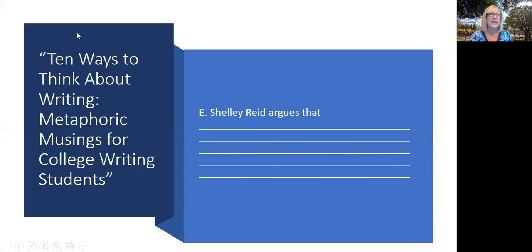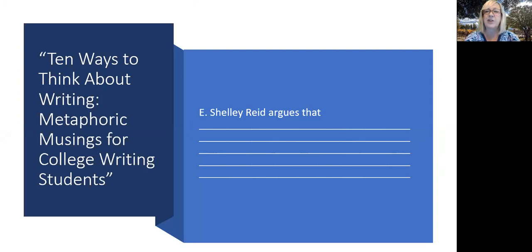E. Shelley Reid had an argument in her article, '10 Ways to Think About Writing.' And if we're going to write about an argument, we would introduce it with this phrase: E. Shelley Reid argues that — and I want you to think about it for just a minute, what is her main point? She spends 23 pages talking about writing in a way that most of you found interesting, some of you found surprising, some of you found enlightening. But every idea fit together under the same argument, the same main point.